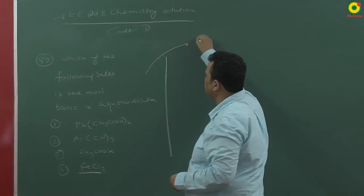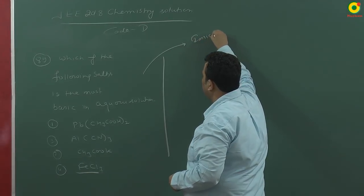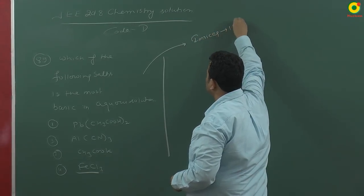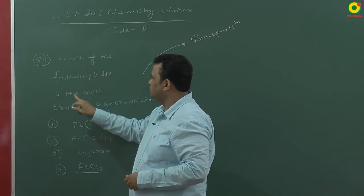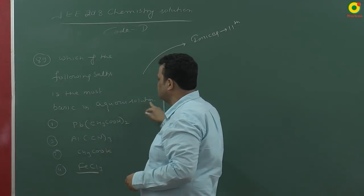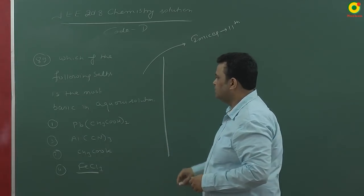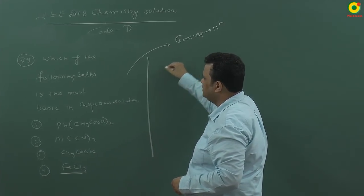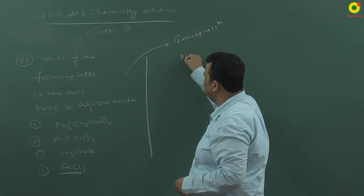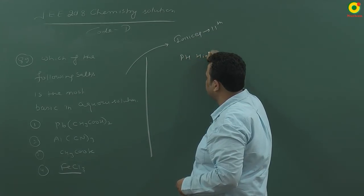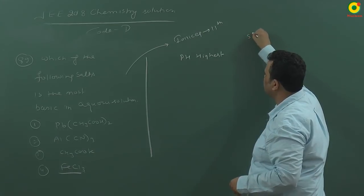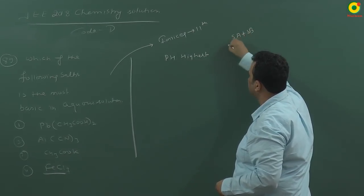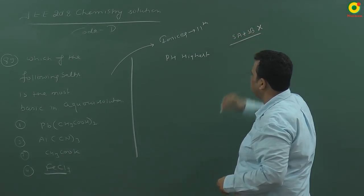Next question is from ionic equilibrium and this is in 11th class. What is asking which of the following salt is the most basic in the aqueous solution. We want to check which is having highest value of pH. We have 4 types of salt.